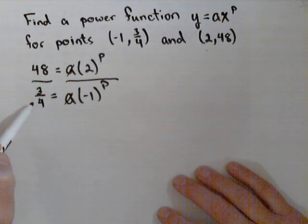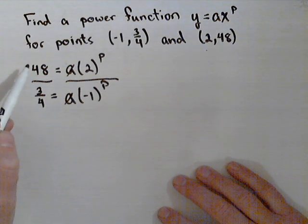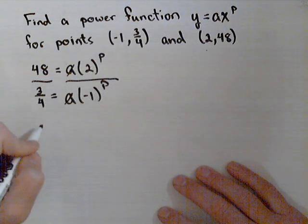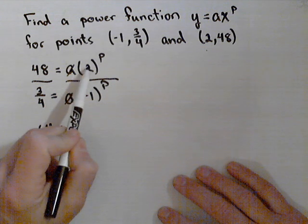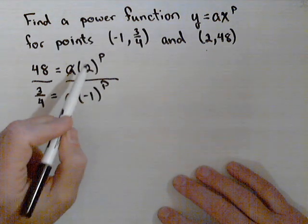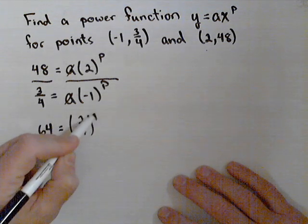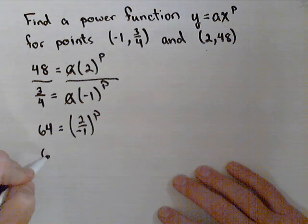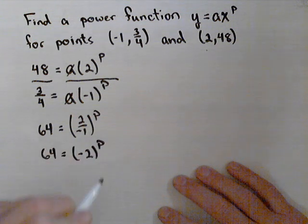Now over here, I end up with 48 divided by 3/4. If I do that, I'm going to get 64 equals. Now on the left hand side, I have 2 to the p over (-1) to the p. I can write that as (2/(-1)) to the p from my properties of exponents. Or 64 equals (-2) to the p.